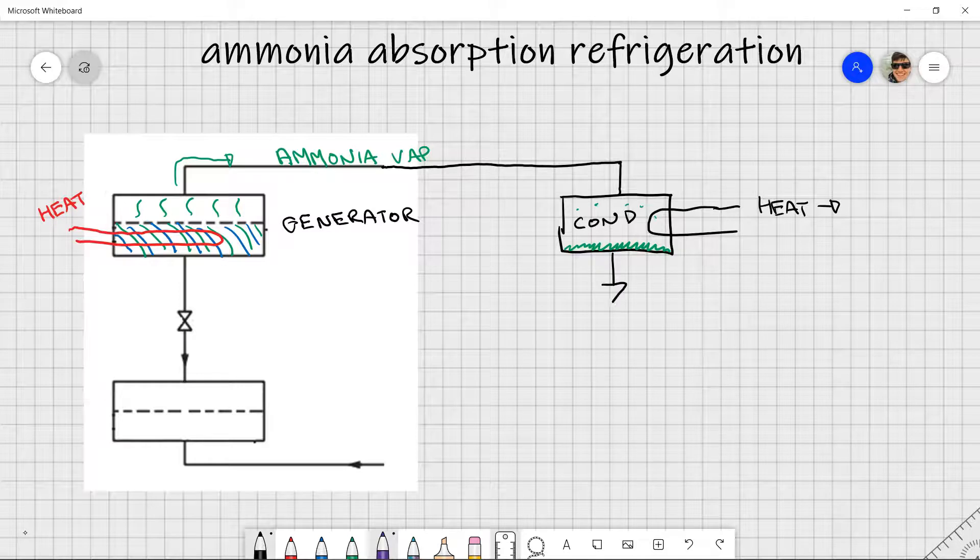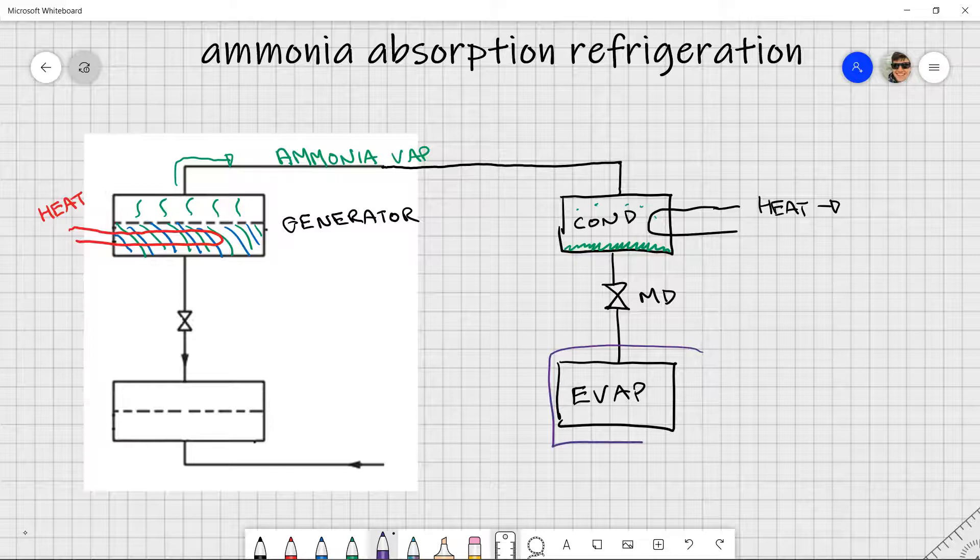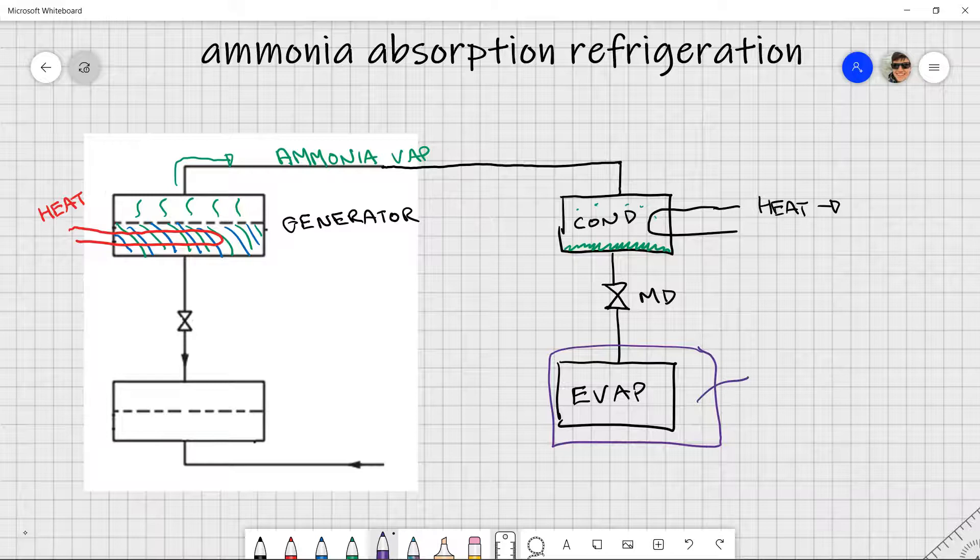It's then going to go to a metering device, and then from there, we go to our evaporator. And our evaporator is typically going to be cooling a refrigerated space. And that might be a typical application of ammonia. So maybe negative 30 degrees Celsius or something like that might be the bottom limit, how cold it might possibly get inside of that cycle.